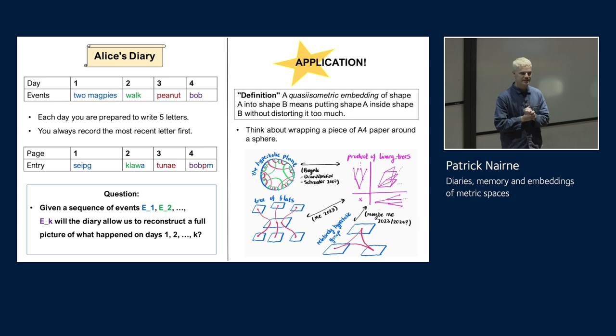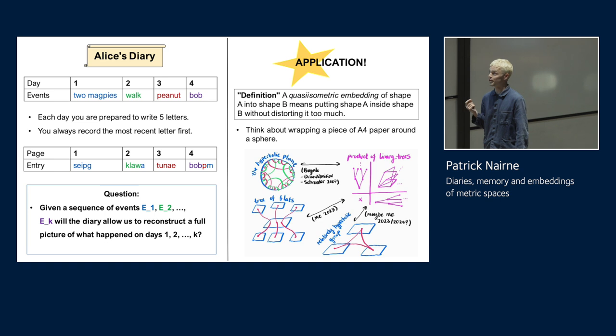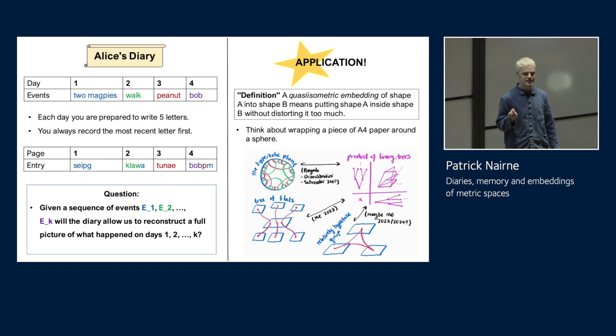If you've ever tried to keep a diary, you might have found yourself worrying whether the 10 or 20 minutes that you dedicate at the end of each day to diary writing is enough time to fully record the events of that day. What's more, if you don't manage to fully record the events of a day, you might find yourself having to catch up on that day's events in future days. Now, surprisingly, in my field of geometric group theory, which sits within the topology group at Oxford, I found some maths which seems to encapsulate this problem quite well. And it's called Alice's Diary. So here's the setup.